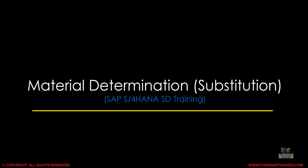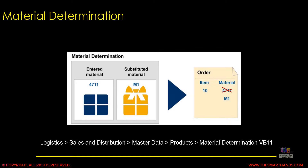Let's look at our next topic: material determination, also known as material substitution. For example, when creating a sales document — a sales order, quotation, scheduling agreement, or contract — if the user enters material code 4711, the system will automatically replace it with another material, say M1. This can be automatic or manual, which I'll cover in a moment.